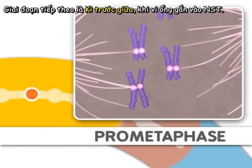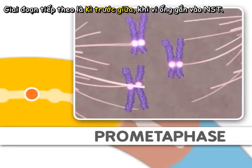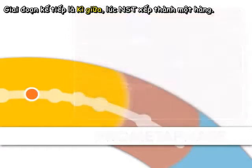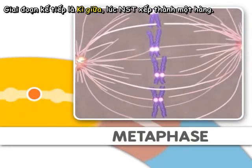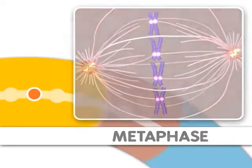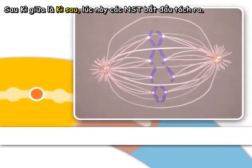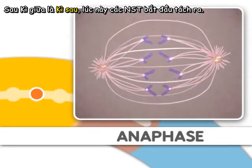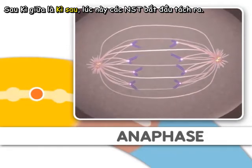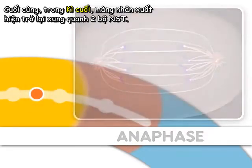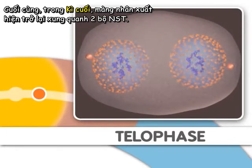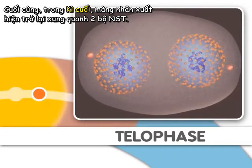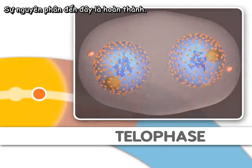Next comes prometaphase, where microtubules attach to the chromosomes. This step is followed by metaphase, where the chromosomes align. Metaphase is followed by anaphase, where the chromosomes separate. Finally, during telophase, nuclear membranes reappear around the two sets of chromosomes. Mitosis is now complete.